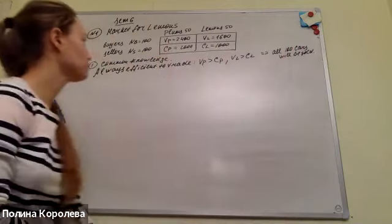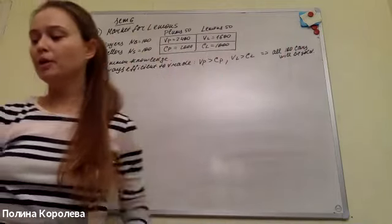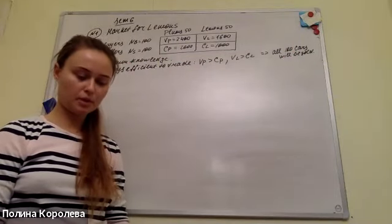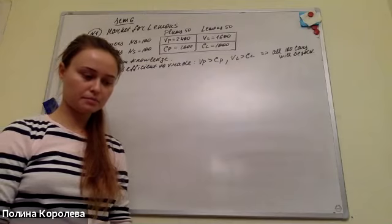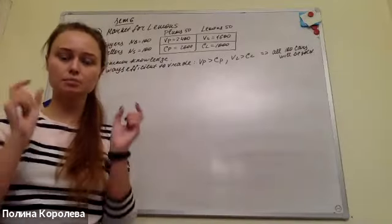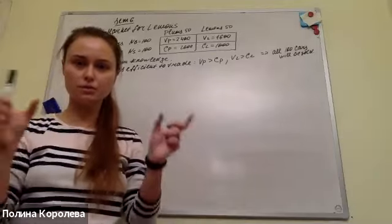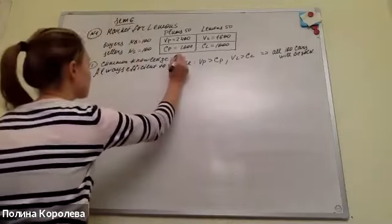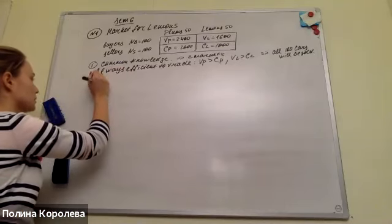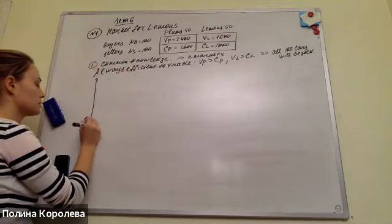If we have common knowledge, how many markets will we have? Two markets. If we have common knowledge, we have two goods — lemons and plums — and two different markets for lemons and plums. Let us draw the graphs and then write down something analytically. The main part is the graph.